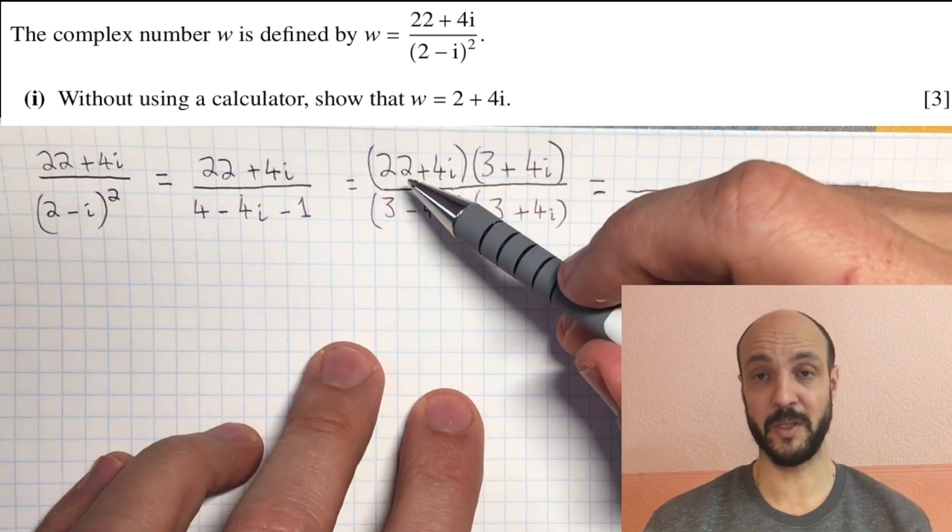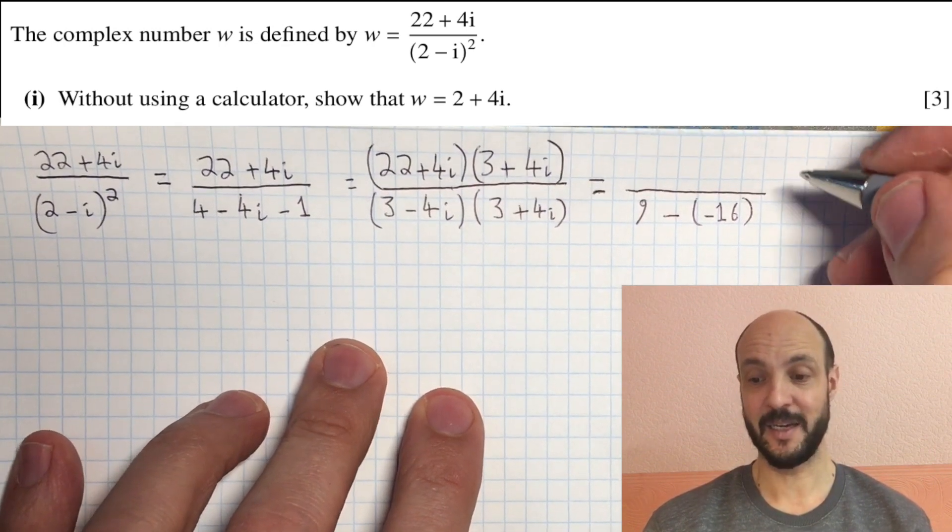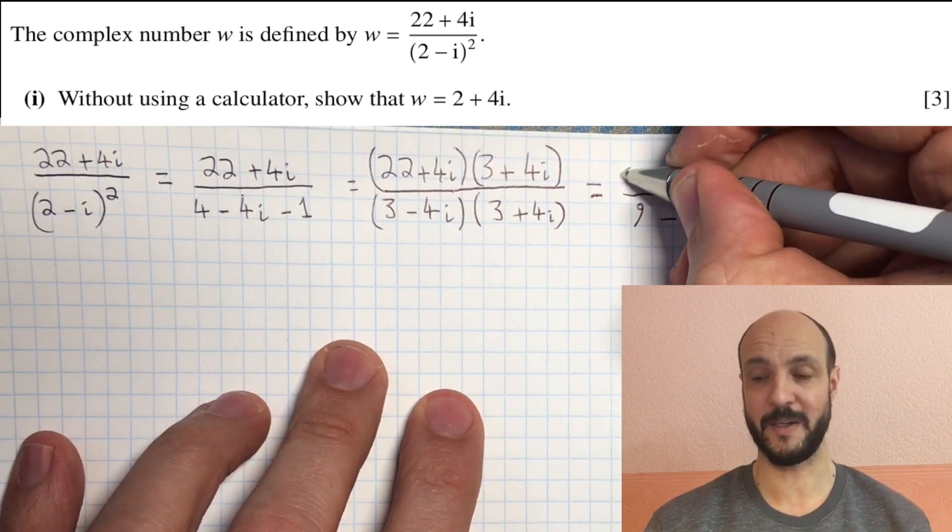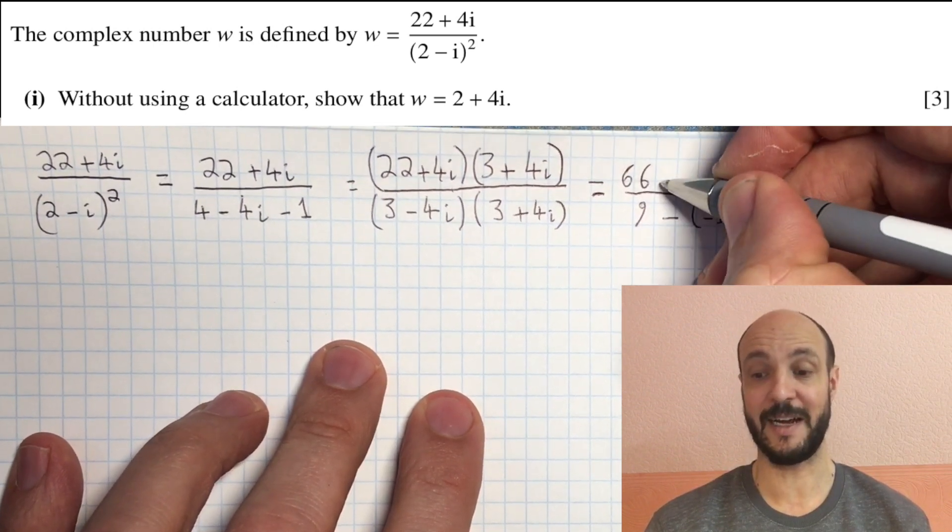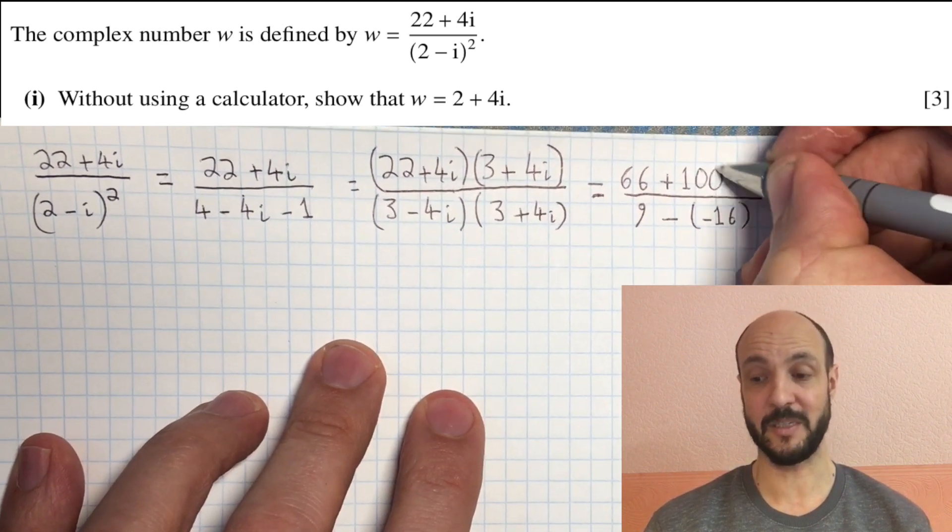And on the top of our fraction, if we multiply out, 22 times 3 is 66. We've got 22 times 4i and 3 times 4i, so a total of 25 times 4i, which is 100i. And 4i times 4i is 16i squared, which is minus 16.